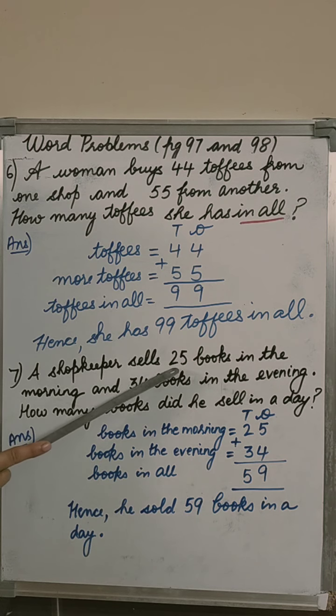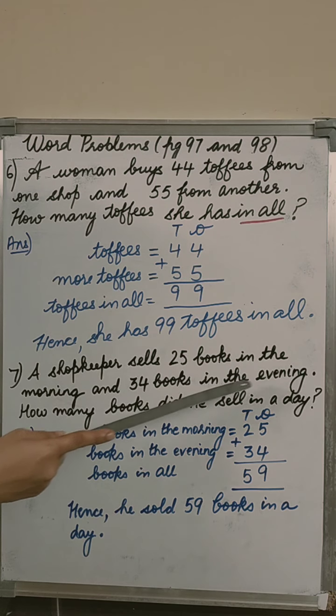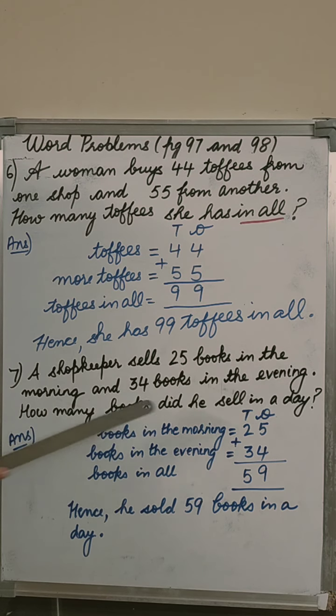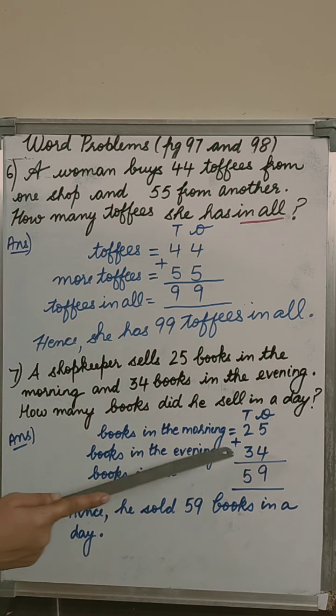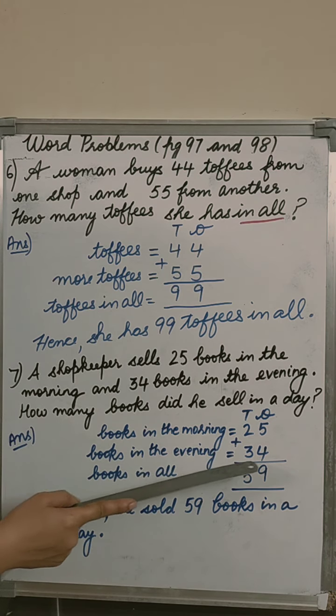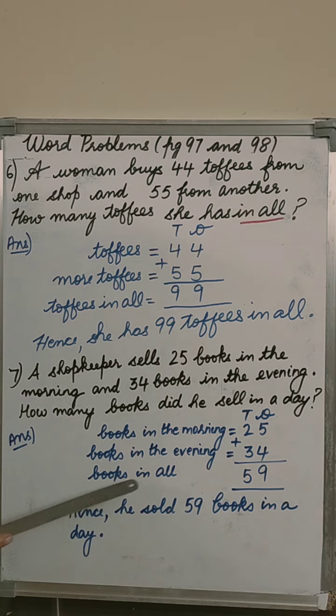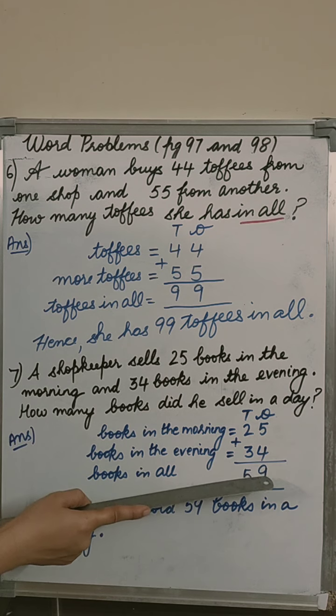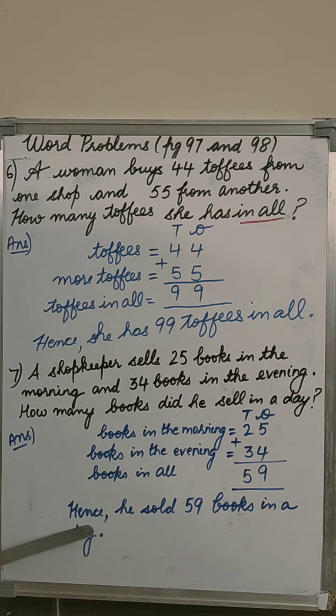Next sum. A shopkeeper sells 25 books in the morning and 34 books in the evening. How many books did he sell in a day? Books in the morning 25, books in the evening 34. Books in a day means books in all. Ones column, 5 plus 4, 9. 2 plus 3, 5. Hence, he sold 59 books in a day.